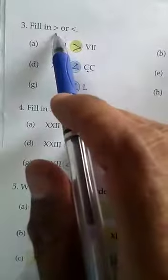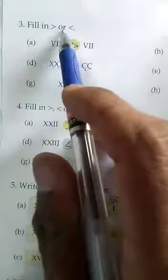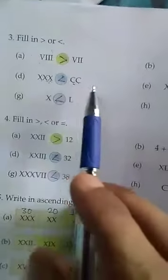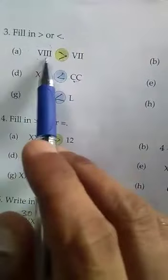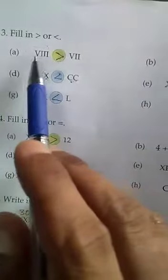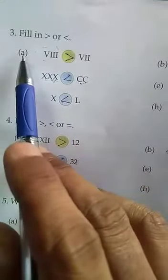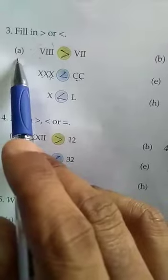Now we will do Q3. Q3 is fill in greater than or smaller than. The questions A to I are given here. We will compare these numbers and write the sign here. So we will do QA.